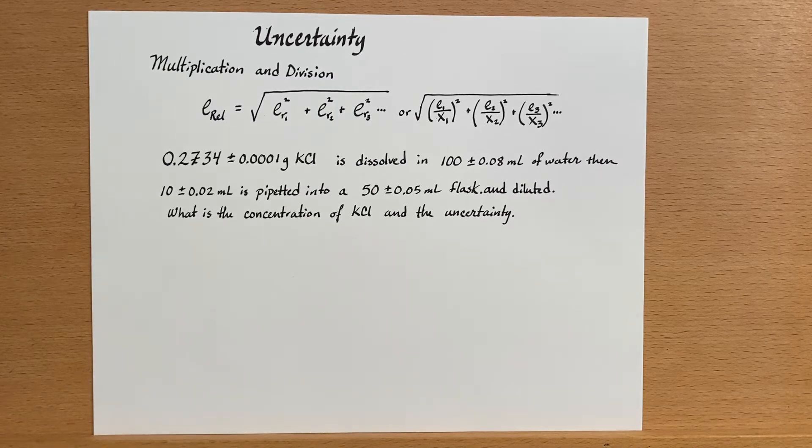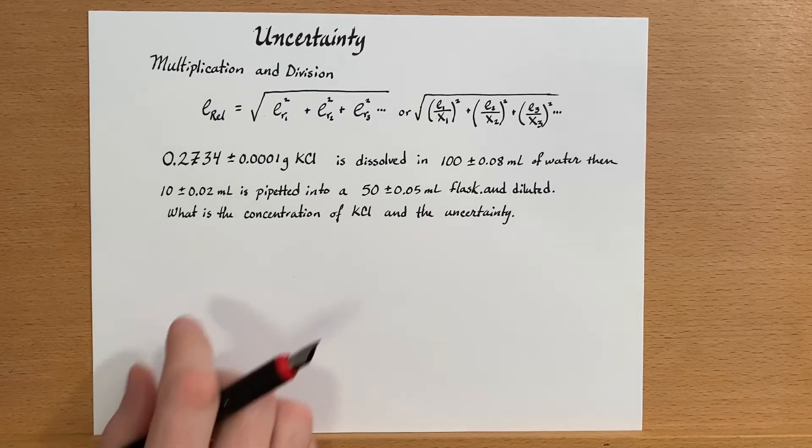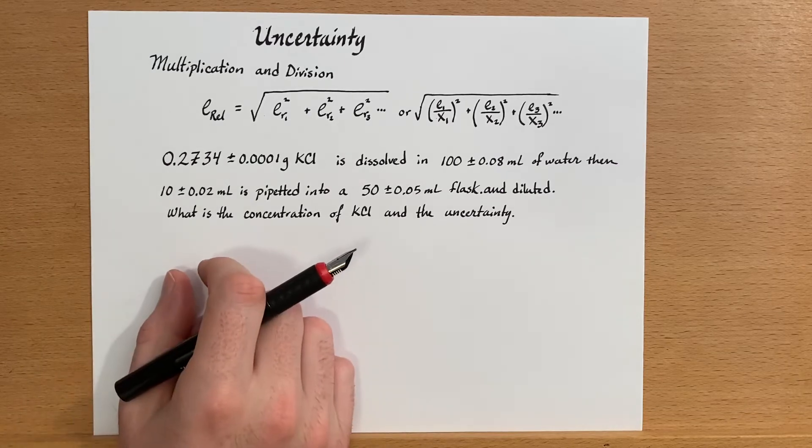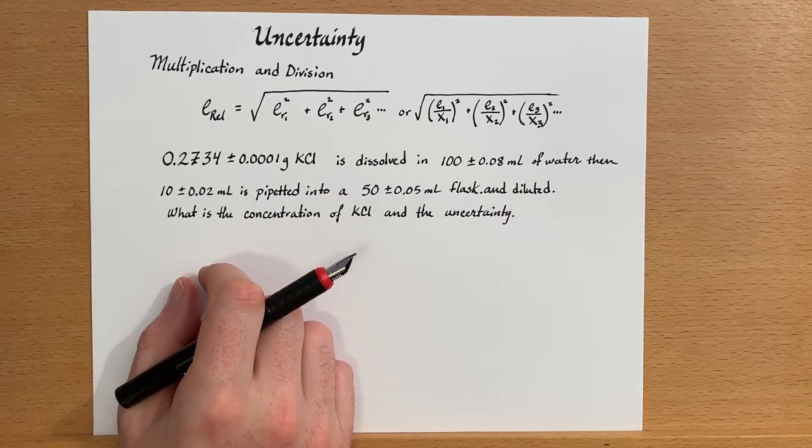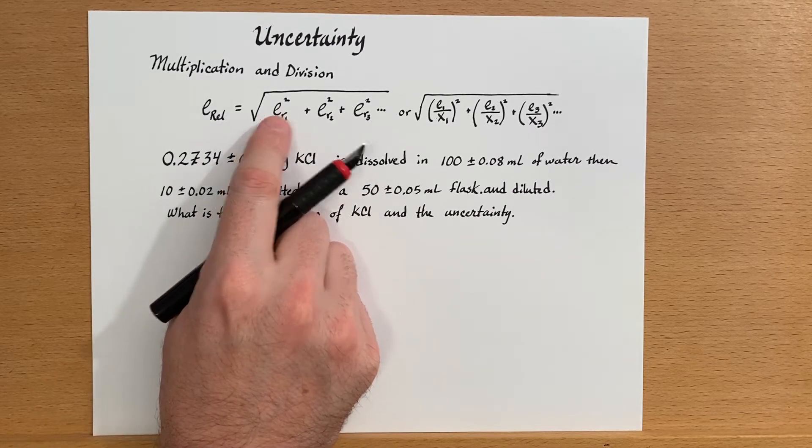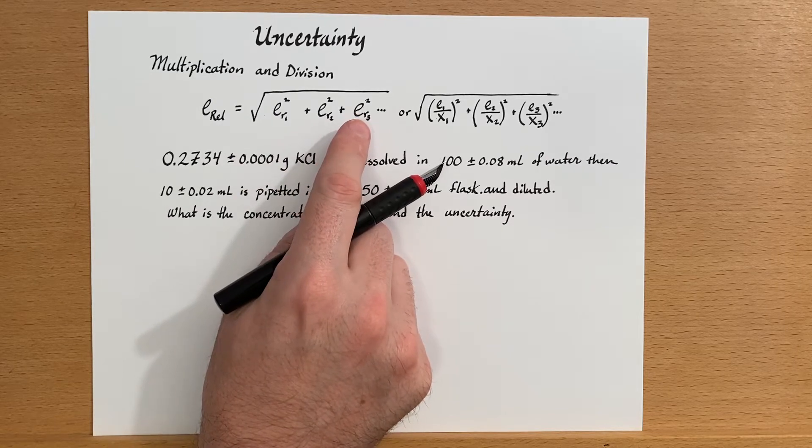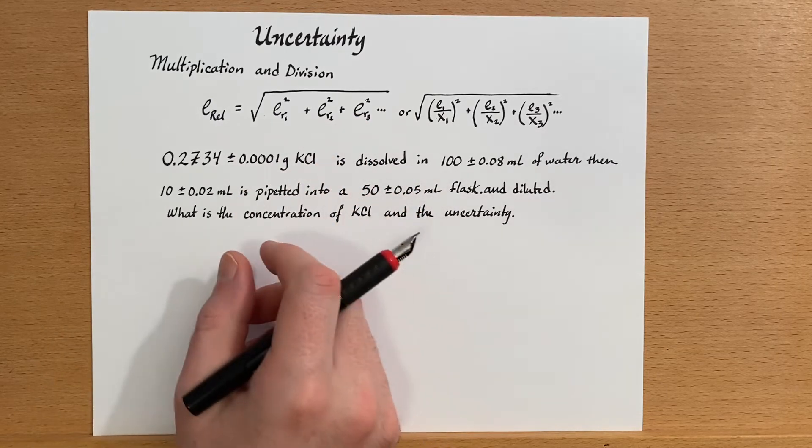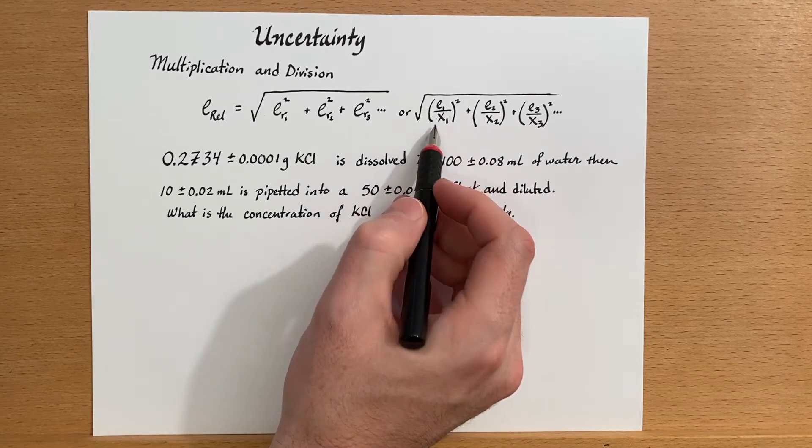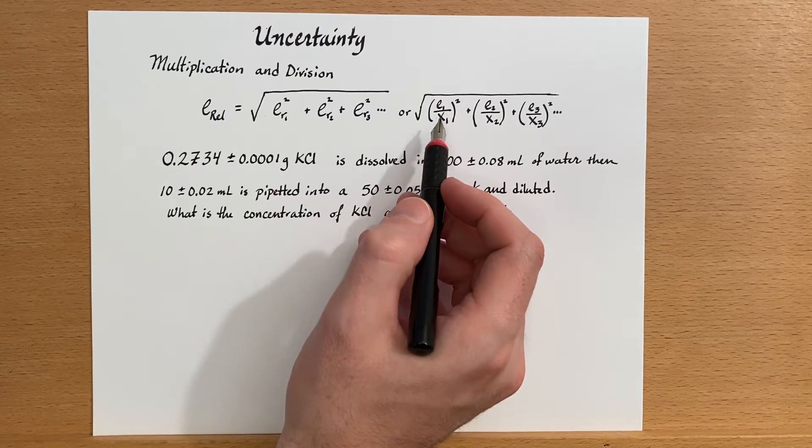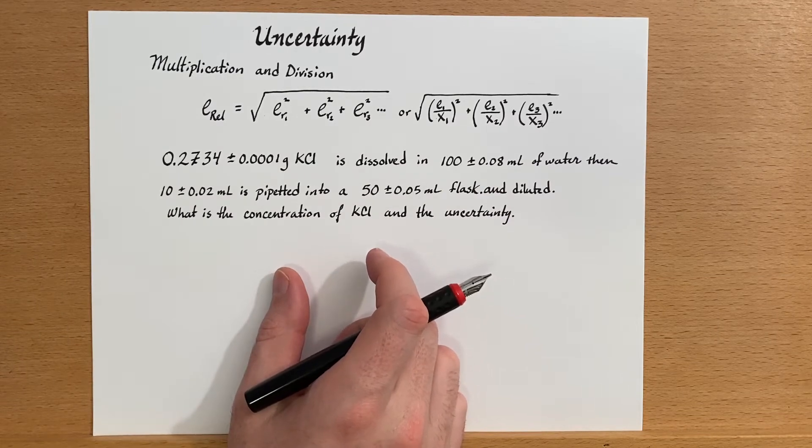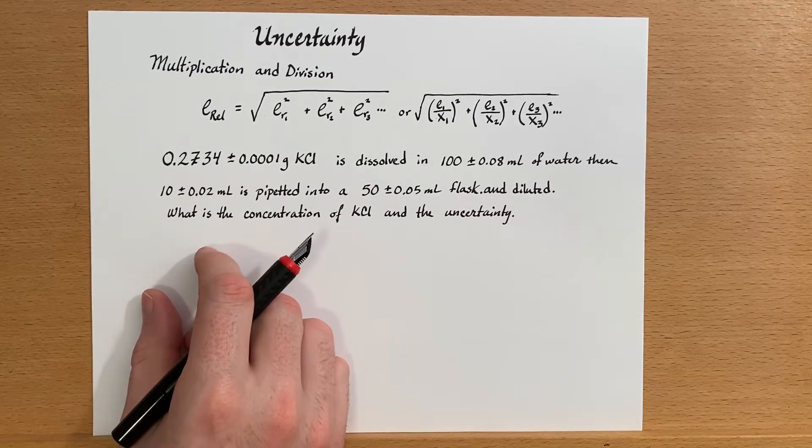Now let's look at an example of propagating uncertainty using multiplication and division operations. This formula is strikingly similar to the one for addition and subtraction with one exception. We're using relative errors in the formula instead of absolute errors. And if you recall, a relative error is the absolute error divided by the magnitude of the measurement. So let's go through and do an example involving relative errors, and we do this when we have multiplication and division.